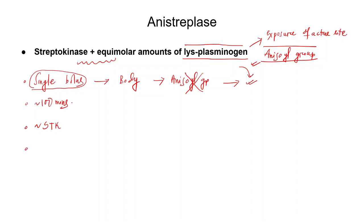The advantage of anistreplase over streptokinase is that it can be given as a single bolus, with a half-life of around 100 minutes. The rest of the properties are similar to streptokinase — antibodies may form, allergic reactions and transient hypotension are also possible because the streptokinase component is present. Randomized studies have not shown any benefit of anistreplase over streptokinase, and it is more costly, so in current practice it is not used.